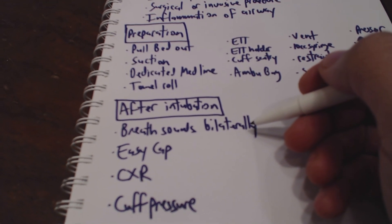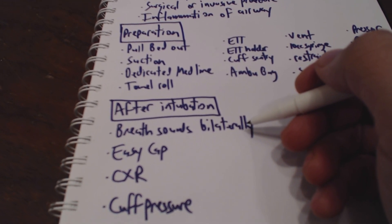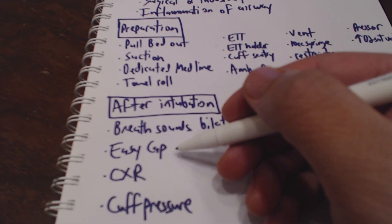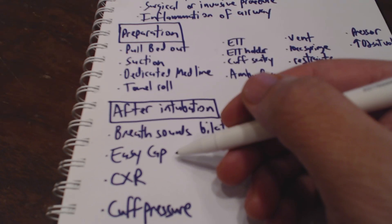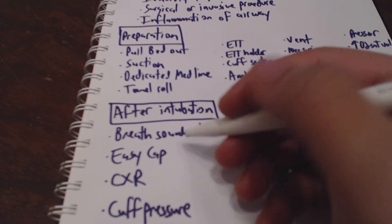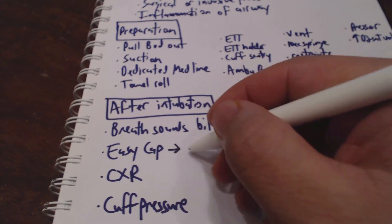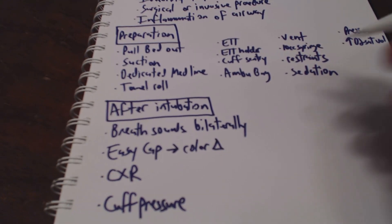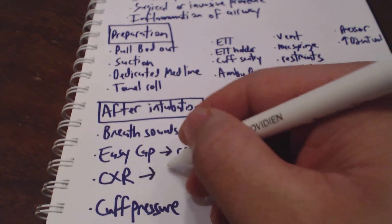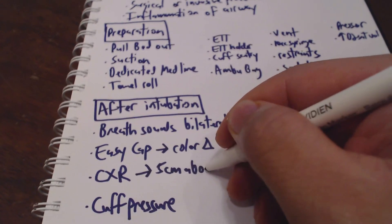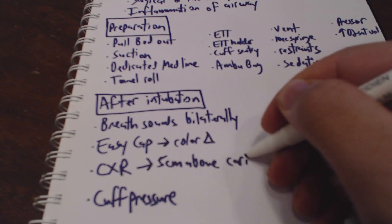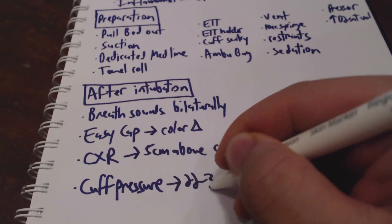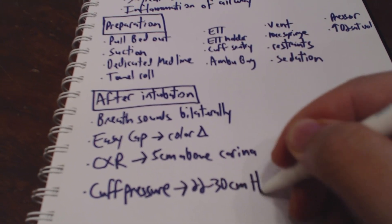If we only hear breath sounds on one side, that means we have to pull back the endotracheal tube so that we're in a good position. The easy cap is an end-tidal CO2 detector — once you exhale and it detects CO2 due to a lower pH, you'll see a color change in the device. For the chest x-ray, we're going to want the angled tip 5 centimeters above the carina. We also have to check the cuff pressure and make sure it's between 22 and 30 centimeters of water.